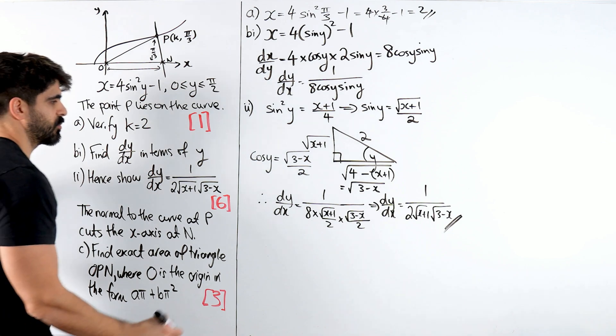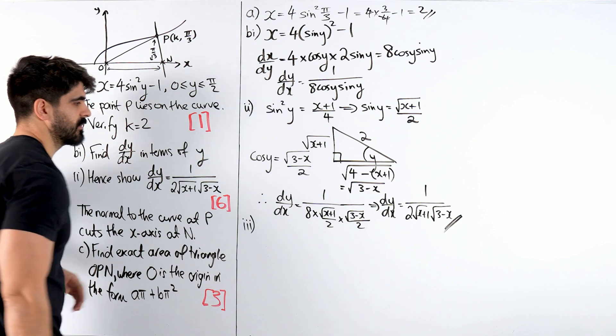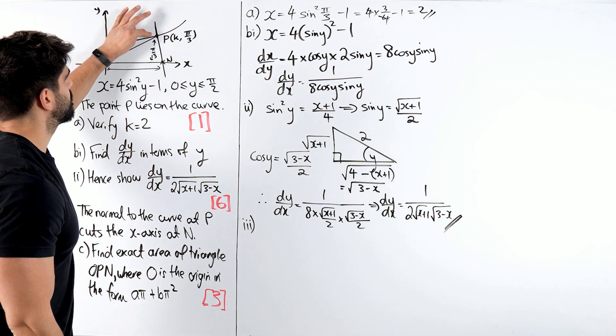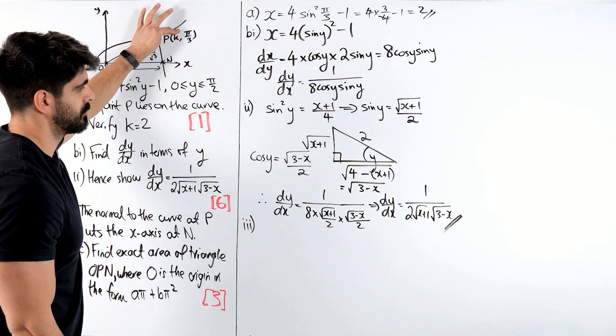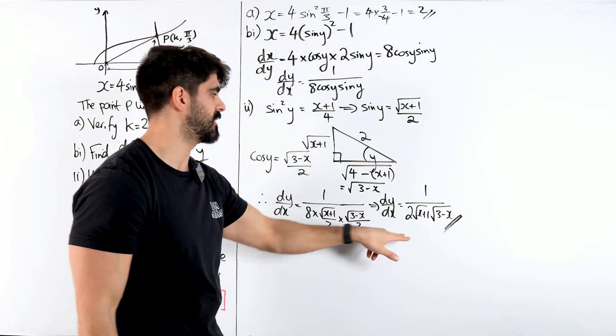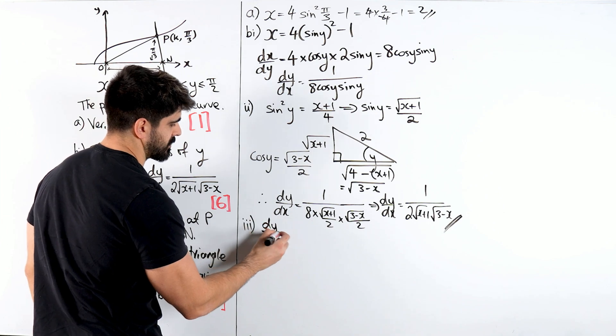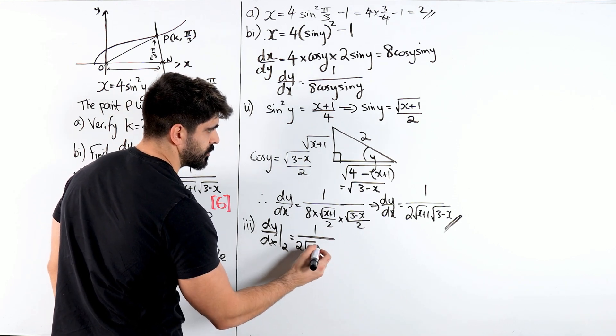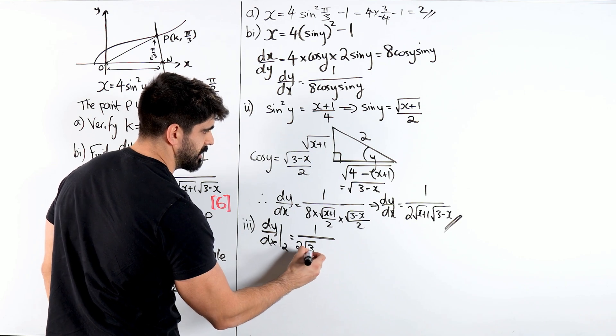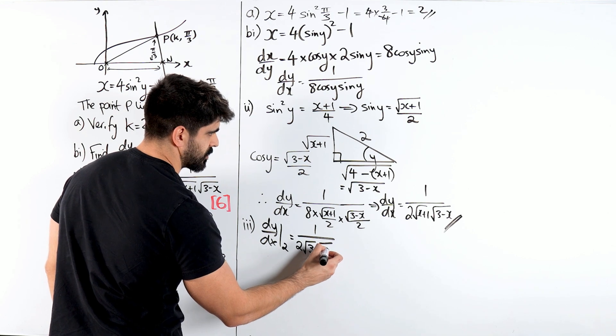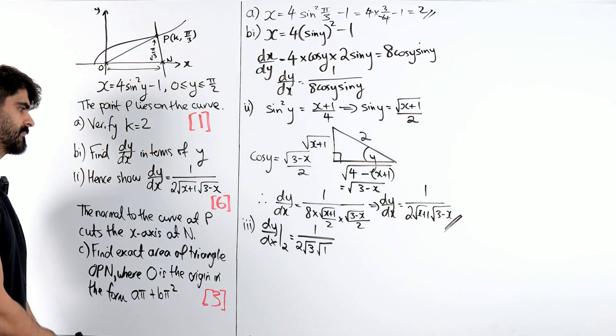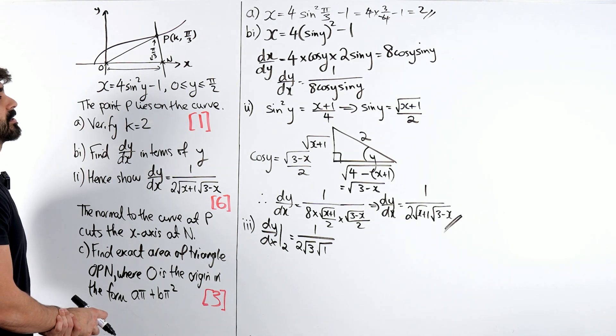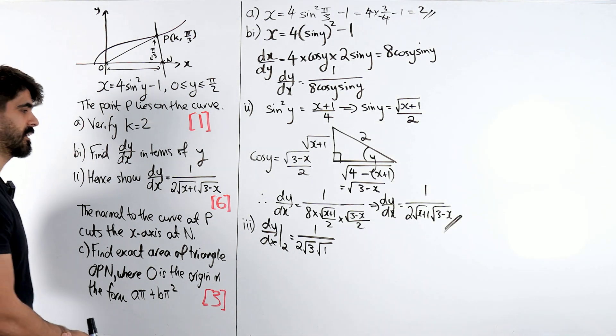So let's work out the normal. Whenever they say normal, I'm thinking about finding the equation of the line. So we're doing the normal at p, we're going to sub in the x value, which is 2, into here. So we're going to find dy by dx at 2, we get 1 over 2 root, root 2 plus 1 is 3, root 3 minus 2 is 1. So you get 1 over 2 root 3.